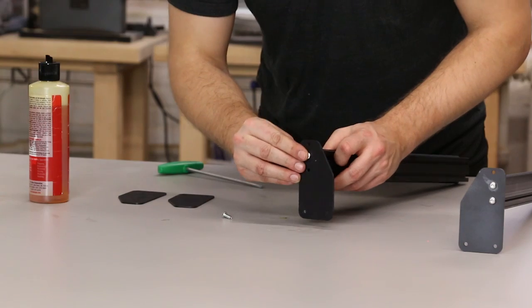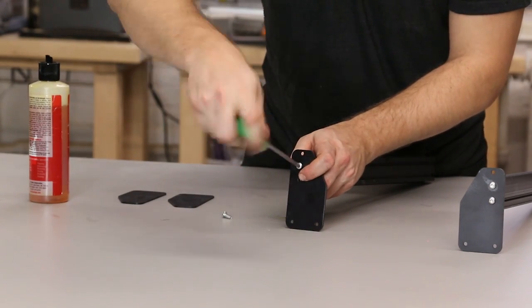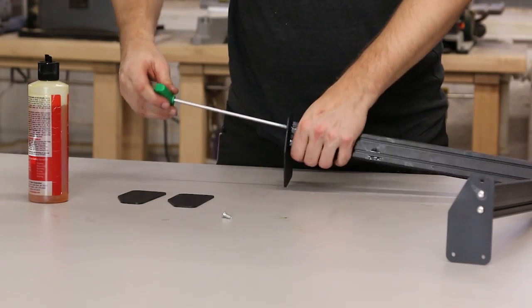Repeat this process with the other piece of maker slide and another end plate, making sure that it's a mirror image of this first sub-assembly.